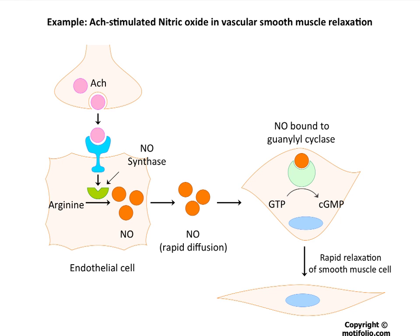A special signal transduction mechanism well worth mentioning — because there are drugs targeting this system — is that acetylcholine in the vascular endothelium basically stimulates nitric oxide synthetase to produce nitric oxide. Nitric oxide diffuses from endothelial cells over to the smooth muscle cell, binds to guanylate cyclase, producing cyclic GMP, which can then lead to rapid relaxation of smooth muscle cells. This is a general motif found in vascular and other smooth muscles, such as in the intestinal tract.